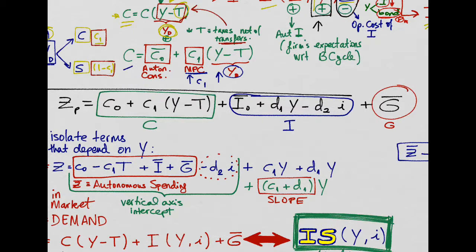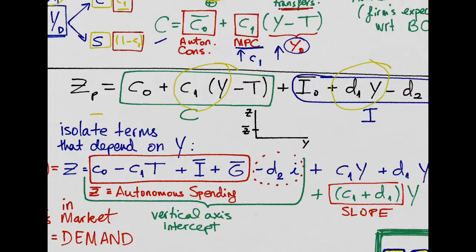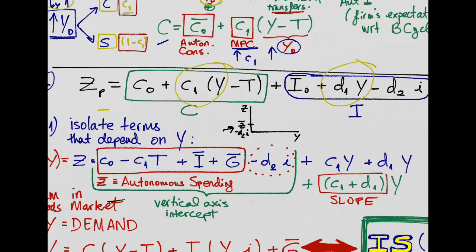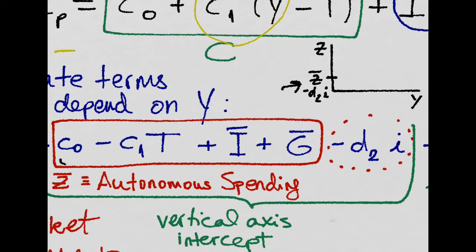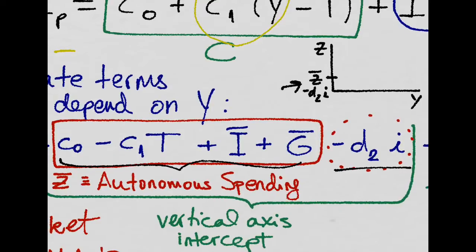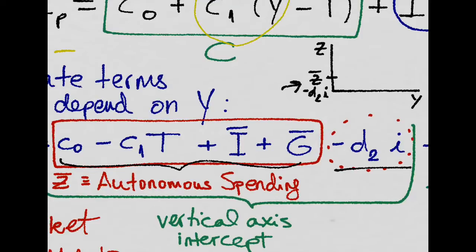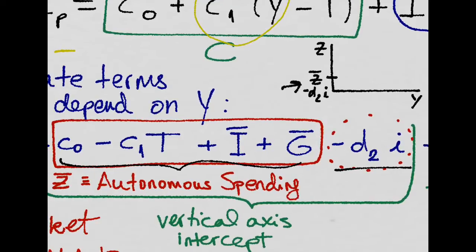Now, if we put it all together, we realize that this depends on Y and this depends on Y. So we want to isolate those two guys to plot demand as a function of income. The vertical intercept will just be this, which is what we call autonomous spending minus the two times the nominal interest rate. Remember, that's the part of demand that does not depend on income. It's just there when there is zero income.